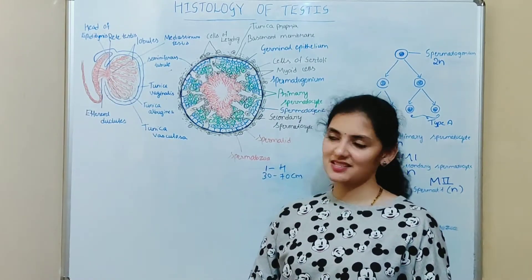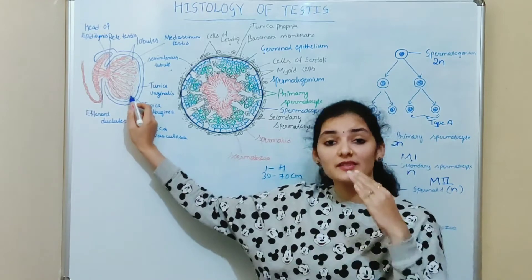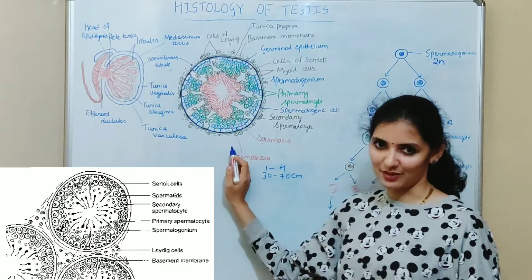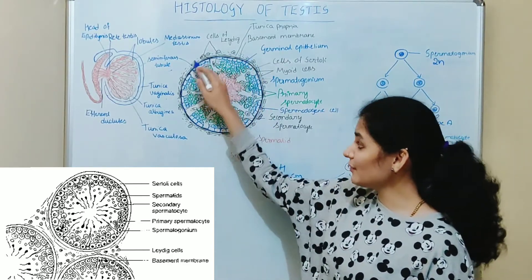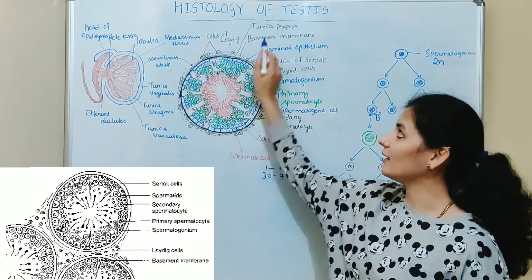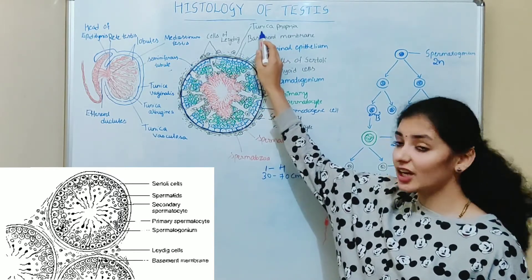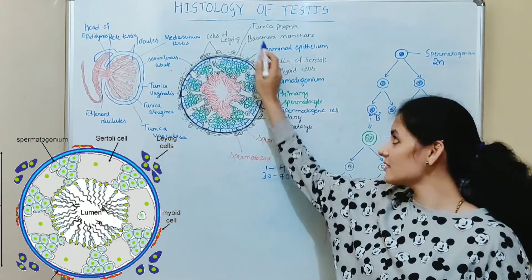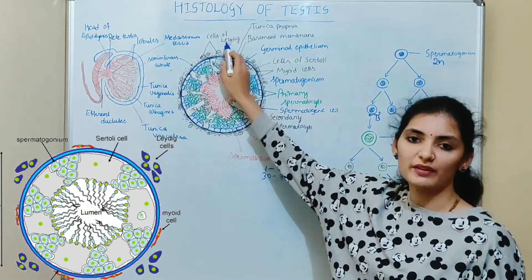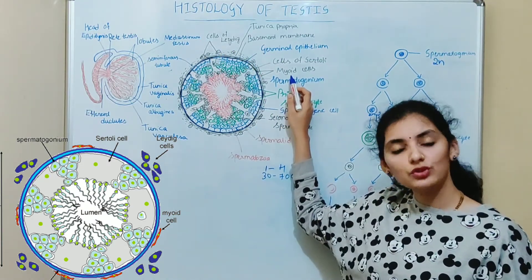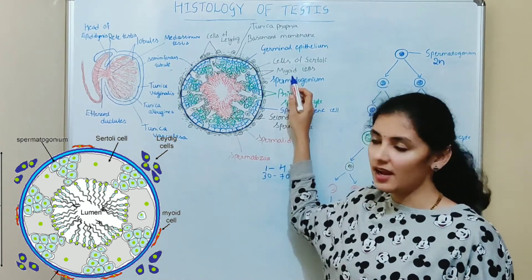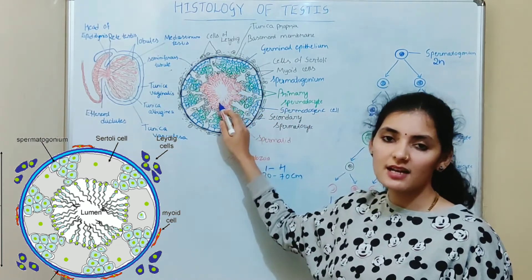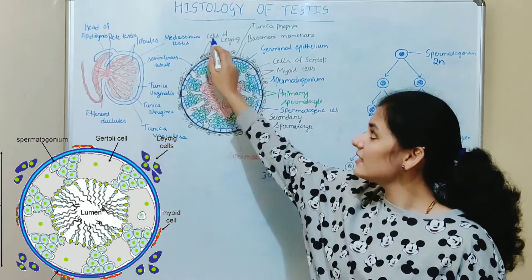Spermatogenesis takes place inside the seminiferous tubule. If you take a transverse section of the seminiferous tubule, we can see different parts. Each seminiferous tubule consists of an outermost capsule called tunica propria. This tunica propria is made of connective tissue with different kinds of cells. The two main cells present here are myoid cells and Leydig cells. Myoid cells are smooth muscle cells which are contractile in nature, and because of this contractile nature, the sperm moves inside the seminiferous tubule.